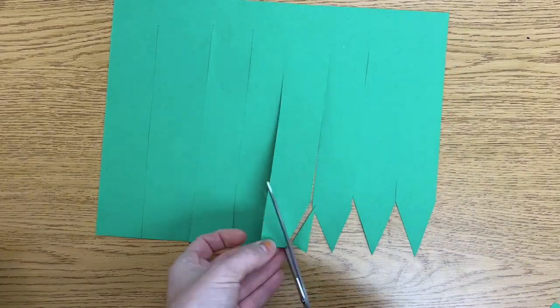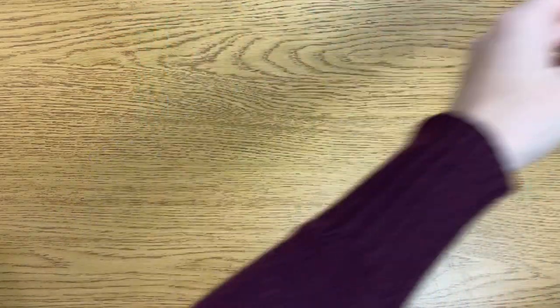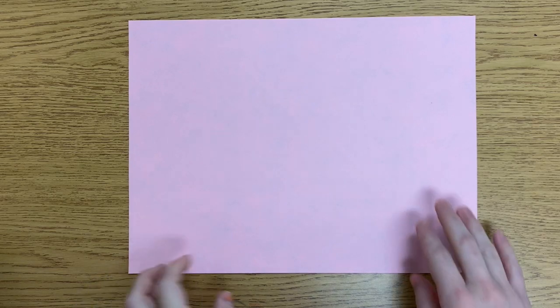Make sure to keep the grass as long as possible and then set it aside. Now I'm going to grab my other paper. This is what I'm going to use for my snakes. I'm going to turn it portrait orientation. And this time I'm going to cut three long strips cut all the way to the end.